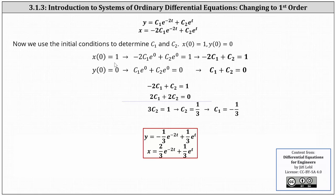Starting with x of zero equals one, we substitute zero for t and set equal to one, giving us negative 2 c1 plus c2 equals one. Using the second initial condition y of zero equals zero, we substitute zero for t and set equal to zero, giving us c1 plus c2 equals zero. To solve the system, we multiply the second equation by two and add the equations together; the c1 terms simplify out, leaving 3 c2 equals one, so c2 equals one-third. Since c1 plus c2 equals zero, c1 equals negative one-third. Therefore y equals negative one-third e to the negative 2t plus one-third e to the t, and x equals two-thirds e to the negative 2t plus one-third e to the t.